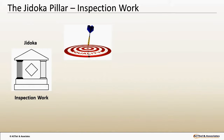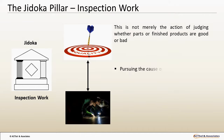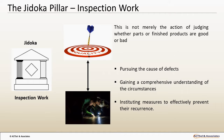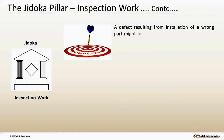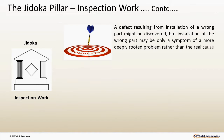Inspection work is not merely the action of judging whether parts or finished products are good or bad. It entails pursuing the cause of defects, gaining a comprehensive understanding of the circumstances to pinpoint the real cause, and instituting measures to effectively prevent their recurrence. Emphasis on pursuit of real causes is necessary because cursory observations of a defect phenomenon can lead to trying to cure symptoms instead of the disease. For example, a defect resulting from installation of a wrong part might be discovered, but installation of a wrong part may be only a symptom of a more deeply rooted problem rather than the real cause.